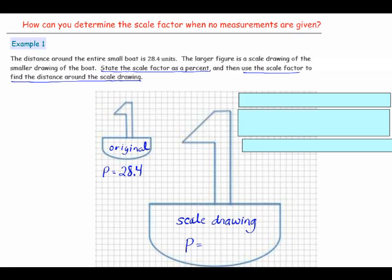In order to calculate the scale factor, you need to know some measurements of the boats. You're going to measure a vertical or horizontal segment on each of the figures. The reason you want to use a vertical or horizontal segment is so that you can count it accurately. Here I can count 1, 2, 3, 4. Then on the scale drawing: 1, 2, 3, 4, 5, 6, 7, 8, 9, 10, 11.